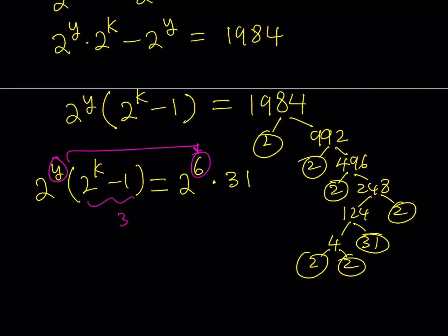And from here, k is equal to 5, right? Because if you set this equal to 31, you get 32, and this is 2 to the 5th power. Great.